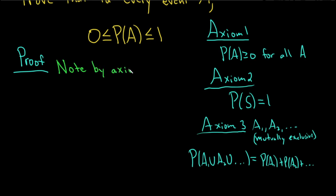the very first axiom, P of A is greater than or equal to 0. So we have P of A greater than or equal to 0. Okay, so we've established that. We just now need to show that it's less than or equal to 1.